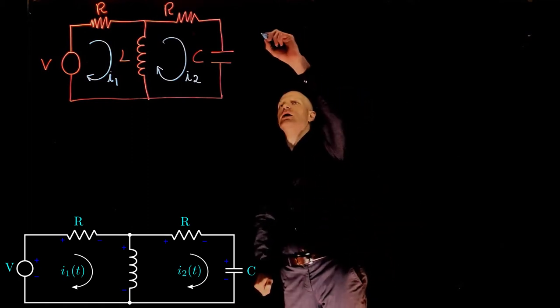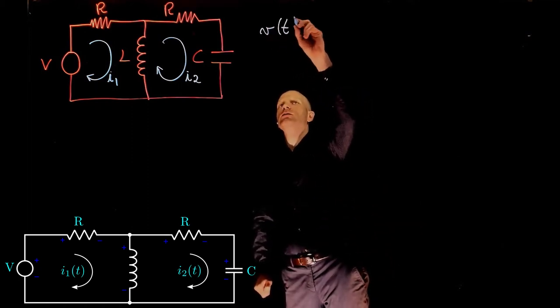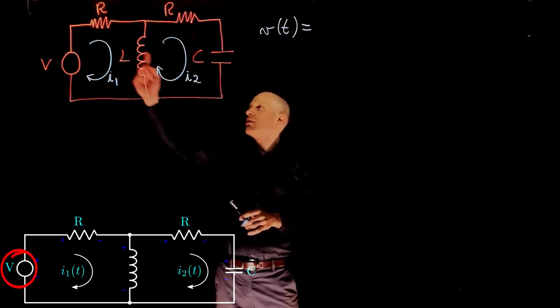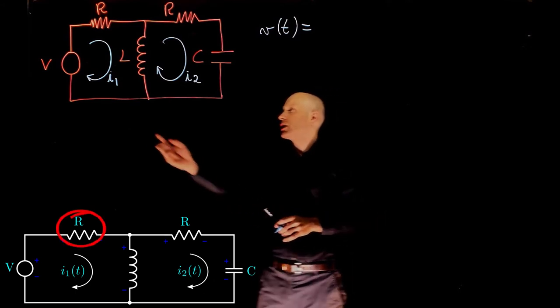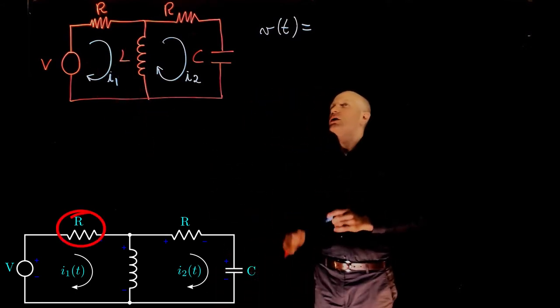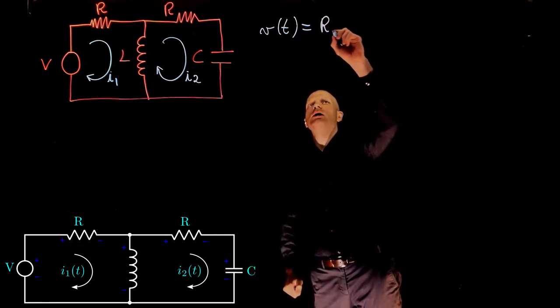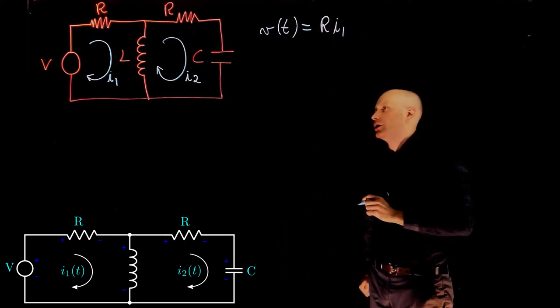We can then write that V of T equals to the sum of voltage drops. Looking at the resistor, the voltage drop as the current passes through it is simply R times the current itself, I1.